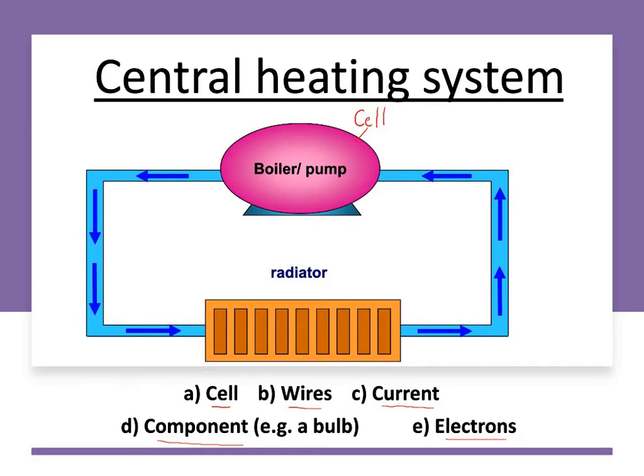And remember, we're talking about a cell, not in a biology terms. We're talking about, it could also mean a battery. Then let's think about the wires. The wires are the things that carry that flow of charge, that flow of electrons. And in our system, hopefully you've already thought of it, it is our pipes. So in this case, the wires are the pipes.